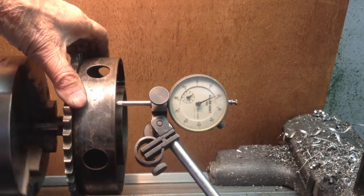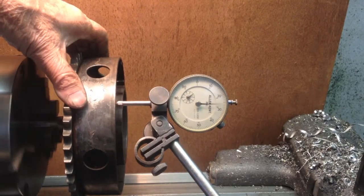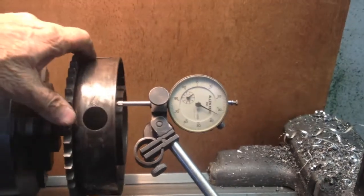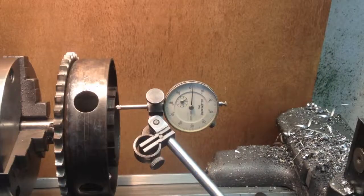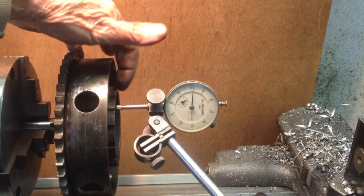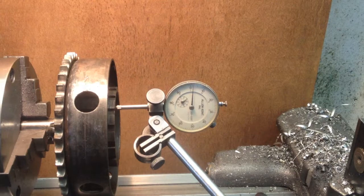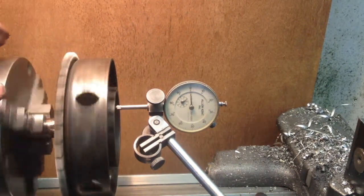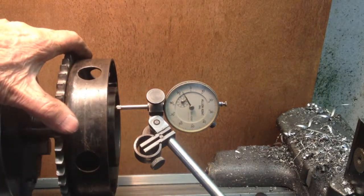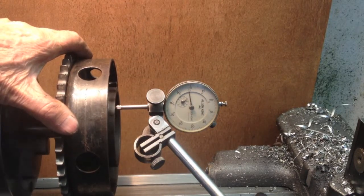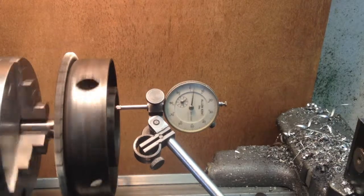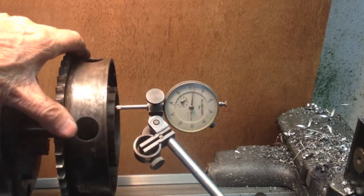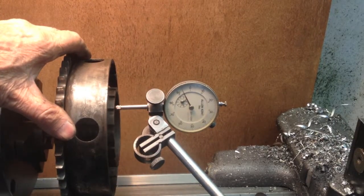And when we check the clutch center, now with the dial indicator running on the clutch center, let's see what we have in the way of run out. So that's 7 or 8 thousandths of an inch.